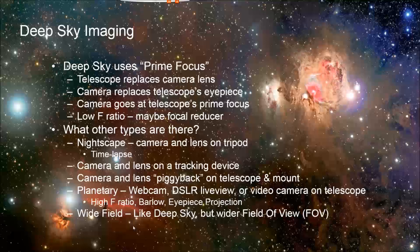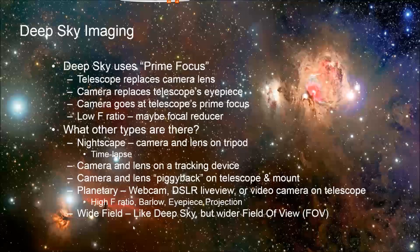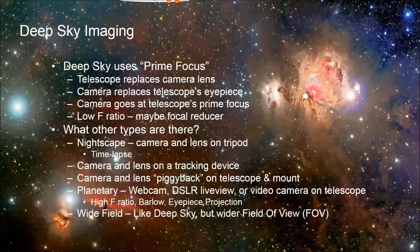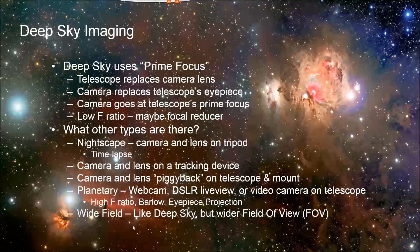This is about deep sky imaging, and that's in contrast to other types of astro imaging, such as nightscapes where you just have a camera and a lens on a tripod — maybe time-lapse, maybe with a tracking device versus a full telescope mount. Other types include putting your camera and lens piggyback on a telescope mount for wide field. There's also planetary, where you're taking pictures of solar system objects like the moon, Jupiter, and Saturn.